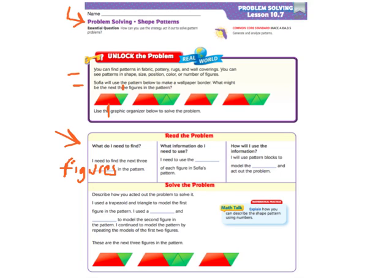I need to use the shape of each figure in Sophia's pattern. How will I use the information? I will use the pattern blocks to model the figures again and act out the problem.